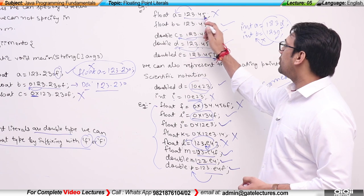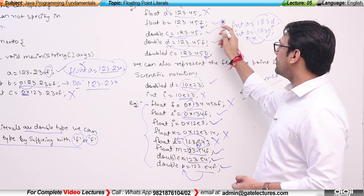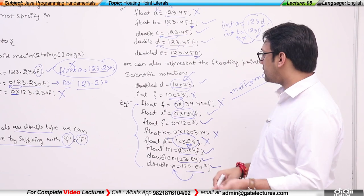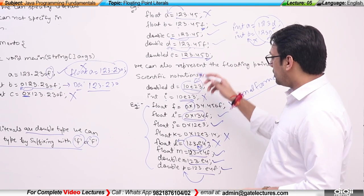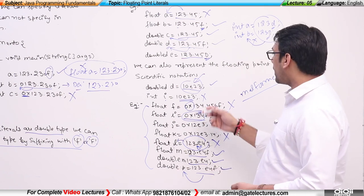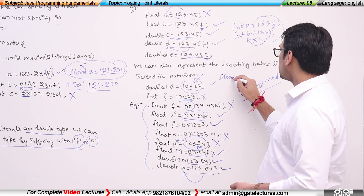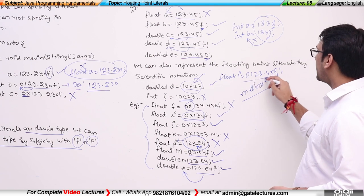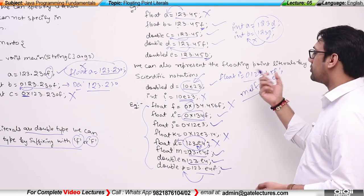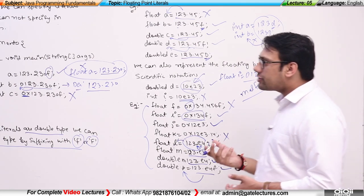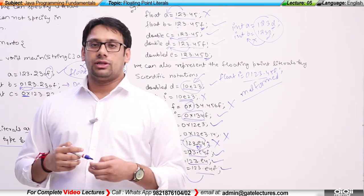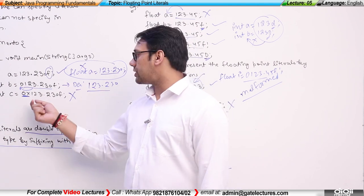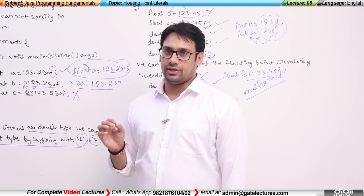In summary: 123.45 assigned to float is wrong, 123.45f is correct, and 123.45 assigned to double is fine. With scientific notation, some cases are correct and some are wrong. We cannot start a floating point number with 0x. Even if you start a float with 0 like 0123.45f, it is a correct expression but it will always be treated as a decimal number, not octal. So for floating point numbers, a leading 0 is treated as decimal, and 0x means it is a malformed expression.